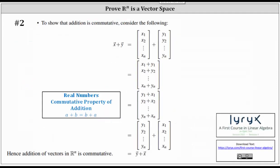Number two: to show that addition is commutative, we again consider vector x plus vector y. We add the corresponding elements, then use the commutative property of addition for real numbers to change the order of the sums. We can then write the column matrix as a sum of two column matrices, where the first is vector y and the second is vector x, showing vector x plus vector y equals vector y plus vector x. Hence addition of vectors in Rn is commutative.